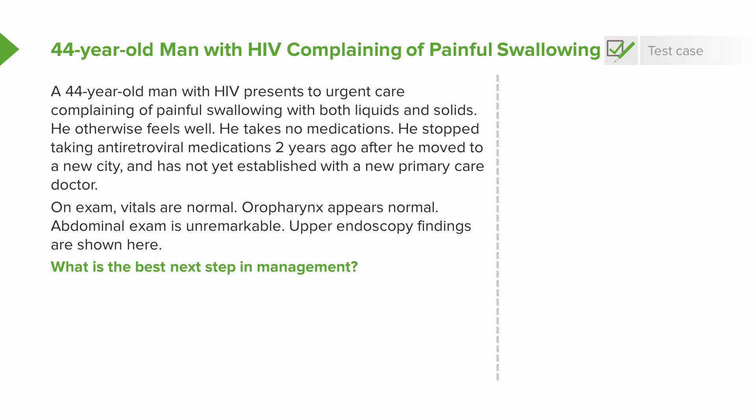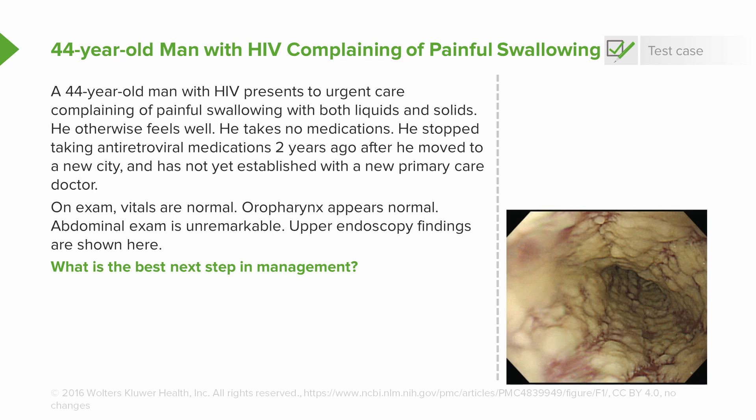On exam, vitals are normal, oropharynx and abdominal exam is unremarkable, and his upper endoscopy findings are shown here. So what is the best next step in management?